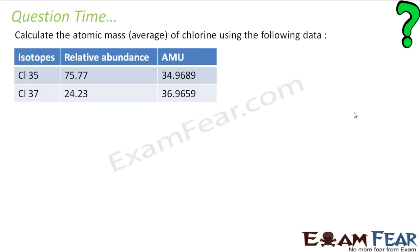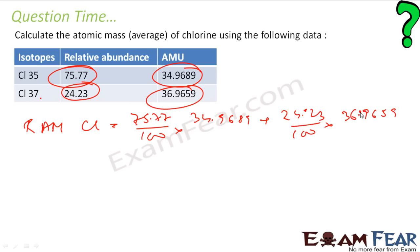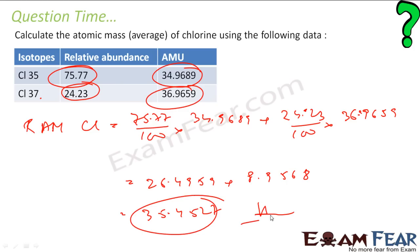Let us find the average atomic mass for chlorine. Chlorine has two isotopes: Cl-35 at 75.77% and Cl-37 at 24.23%. Relative atomic mass = (75.77/100 × 34.9689) + (24.23/100 × 36.965) = 26.4959 + 8.9568 = 35.4527. That is the relative atomic mass of chlorine. Pretty straightforward.